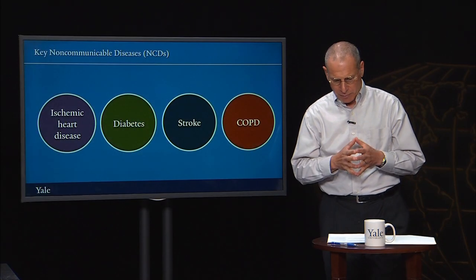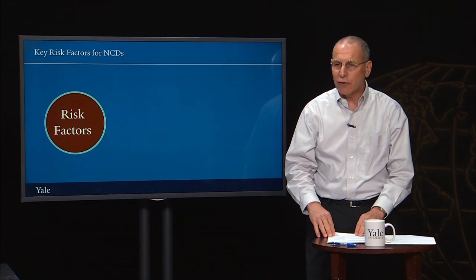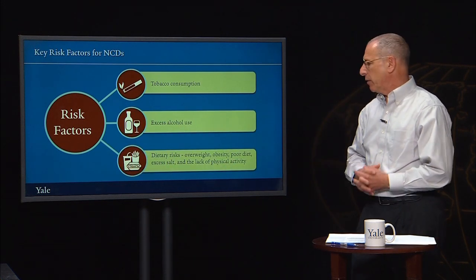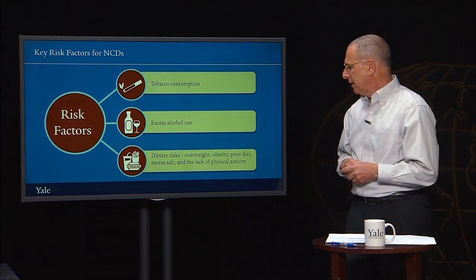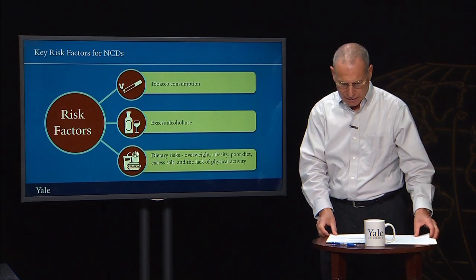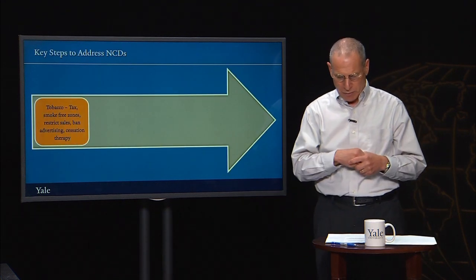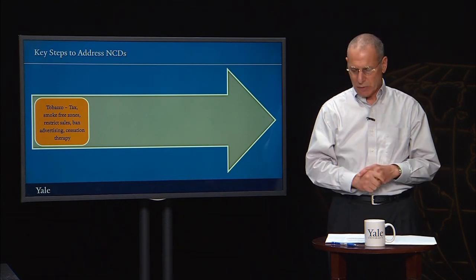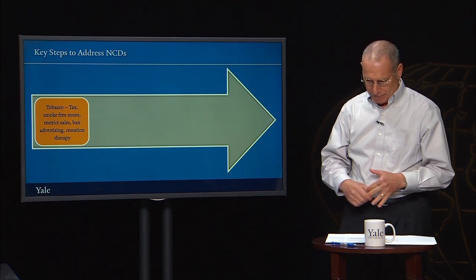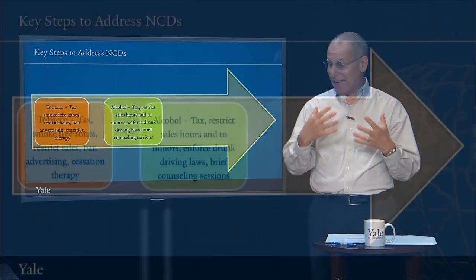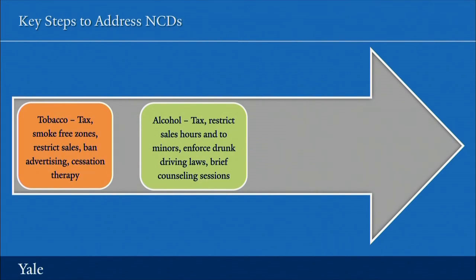To address non-communicable diseases, we're going to have to address the underlying risk factors, especially tobacco consumption, excess alcohol use, and dietary risks including overweight, obesity, poor diet, excess salt, and the lack of physical activity. For tobacco, there's a well-known package of taxes, smoke-free zones, restricting sales, banning advertising, and offering cessation therapy. For alcohol, there's also a well-known package — though put in place less than for tobacco — of taxing, restricting sales hours, restricting sales to minors, enforcing drunk driving laws, and offering brief counseling sessions.